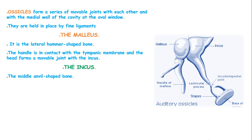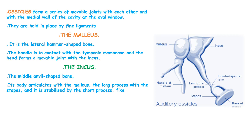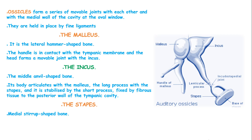The incus is a molar-shaped bone whose body articulates with the malleus and whose long process articulates with the stapes. It is stabilized by the short process and fixed by fibrous tissue to the posterior wall of the tympanic cavity. The stapes is the medial stirrup-shaped bone. Its head articulates with the incus and its footplate fits into the oval window.